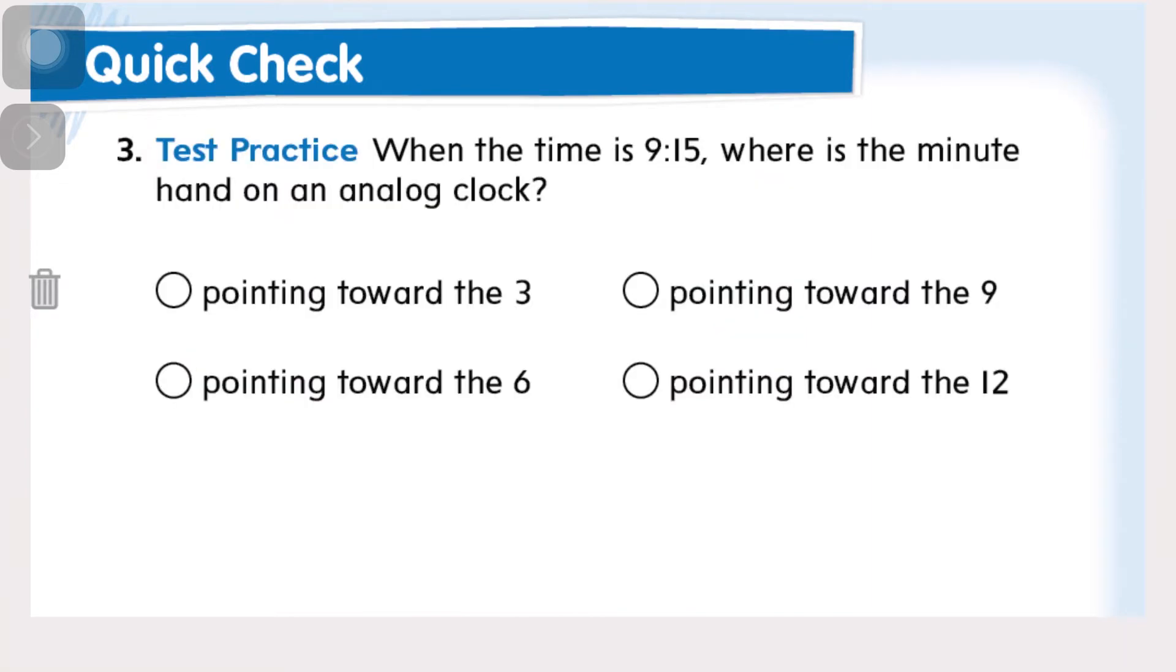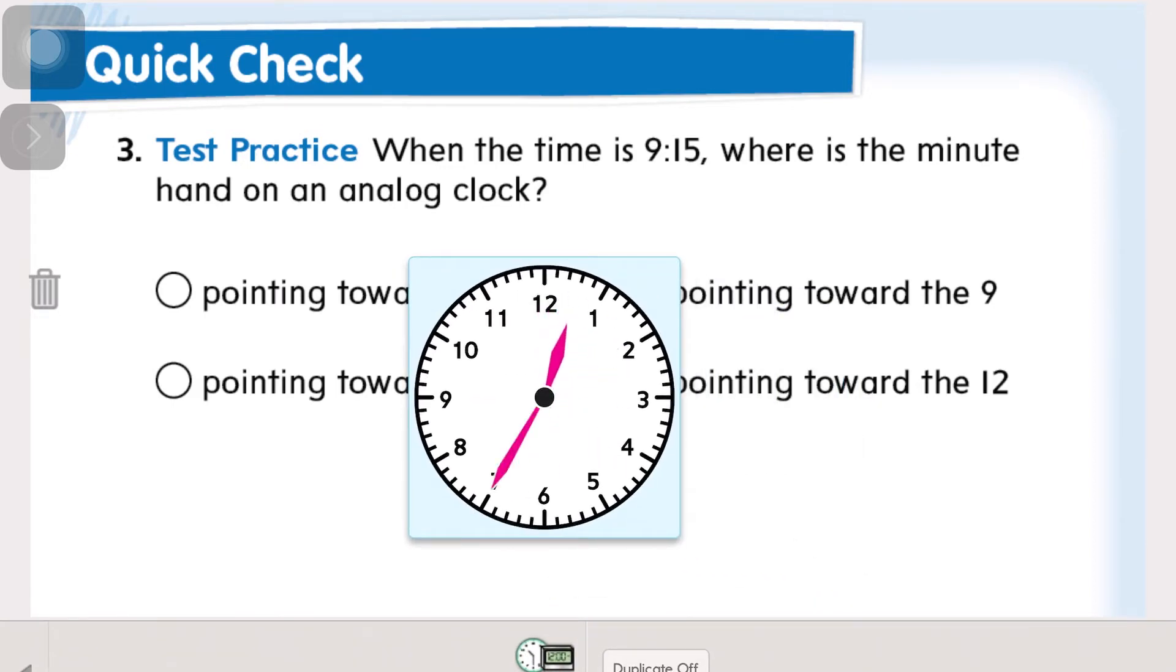When the time is 9:15, where is the minute hand on an analog clock? So let's go ahead and get an analog clock out and we're going to make 9:15. Nine o'clock first, and then 15: 5, 10, 15. So the minute hand is on the number 15, so the minute hand is on the number 3.